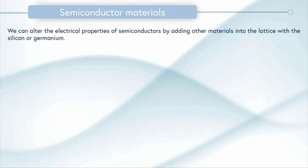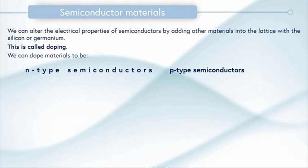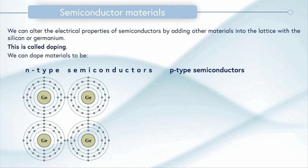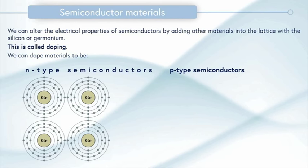We can alter the electrical properties of semiconductors by adding other materials into the lattice with the silicon or the germanium. And this process is known as doping. We can dope materials to be either n-type semiconductors or p-type semiconductors. What does this mean? Well, let's look at n-type semiconductor.